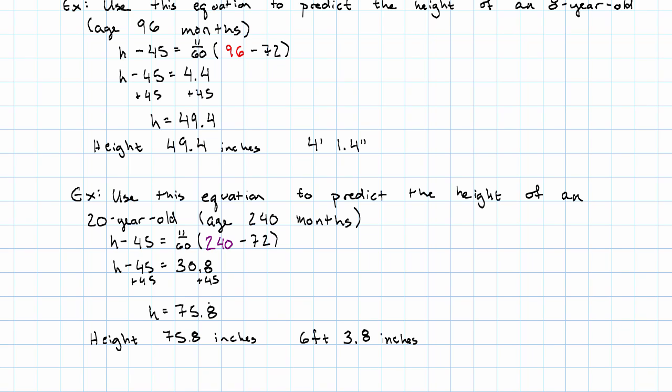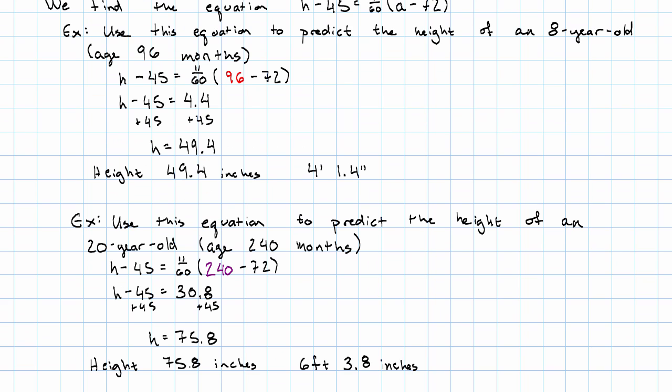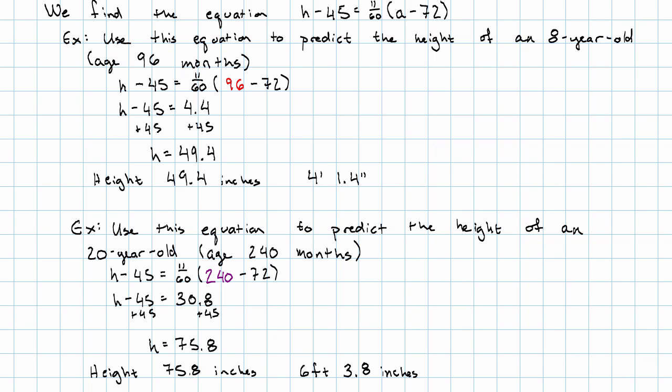It would get even worse if we tried to use this equation to predict the height of a 30-year-old. So, what do we notice? When we interpolate, we'll typically get pretty reasonable values. When we extrapolate, we might get values that are more unreasonable.